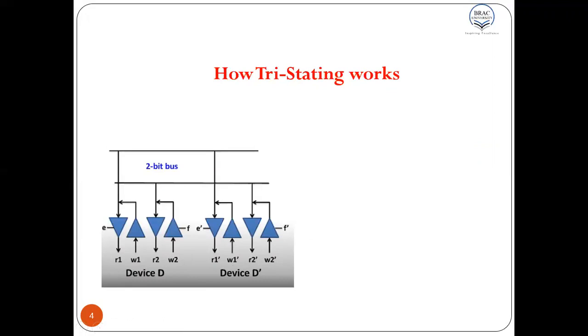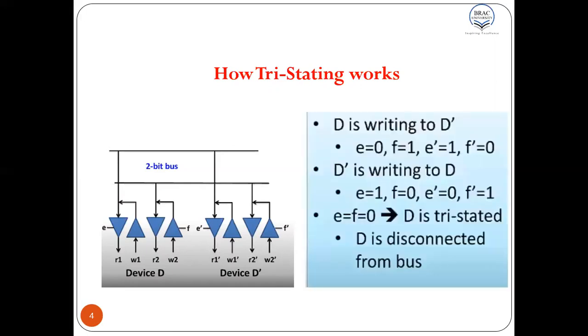Now, in order to support transfer of data from D to D', what do you think the values of the various enable lines? Well, we should have F equal to 1 corresponding to D writing and E equal to 0.